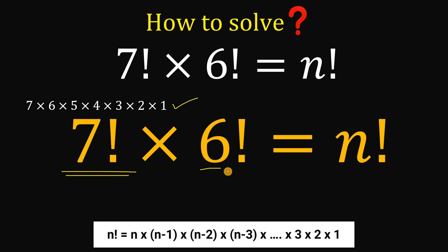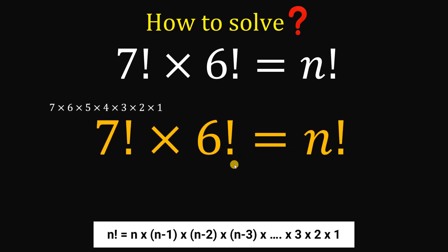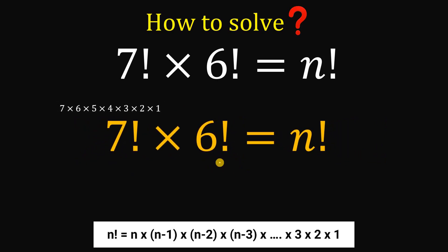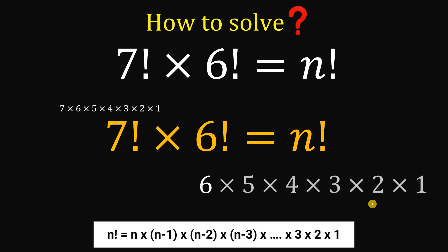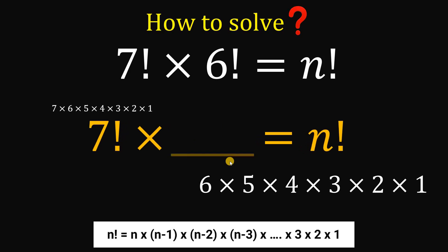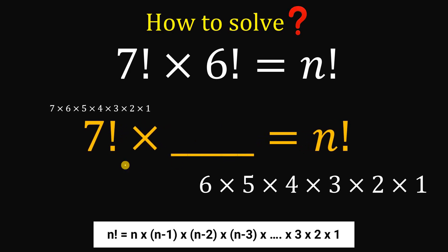Now let's look at the 6 factorial. What we're going to do is replace this 6 factorial with some factors. So 6 factorial is equivalent to 6 × 5 × 4 × 3 × 2 × 1. Let's replace this 6 factorial with those factors.